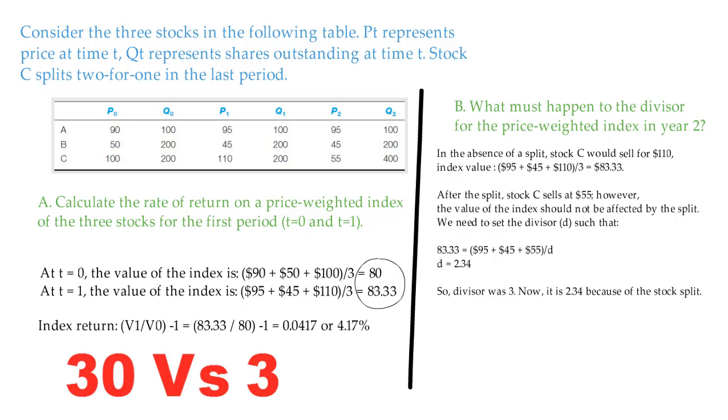So, divisor was 3 in the previous example. Now, it is 2.34 because of the stock split. And this divisor 2.34 will continue to use till another stock split information comes in.